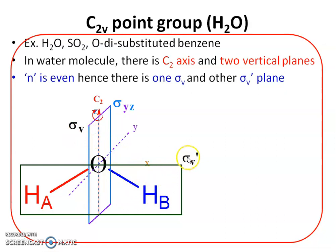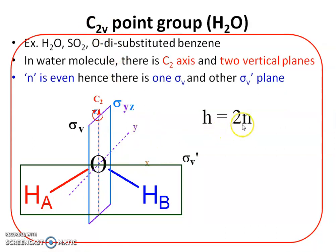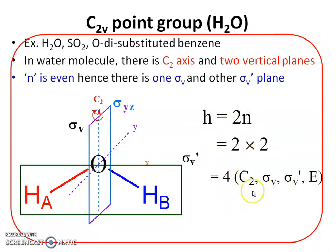The second plane, sigma V prime, is at right angles to the sigma V plane. So water has one C2 axis and two vertical planes, confirming it belongs to the C2V point group. With H = 2N and N = 2, the order is 4. The four symmetry elements are: C2¹, C2² (= identity), sigma V, and sigma V prime.